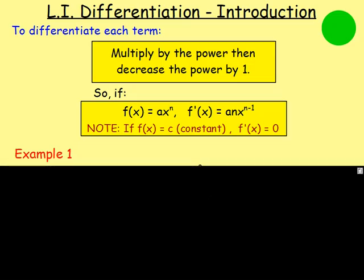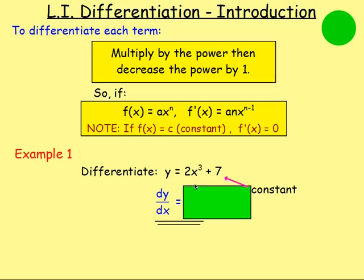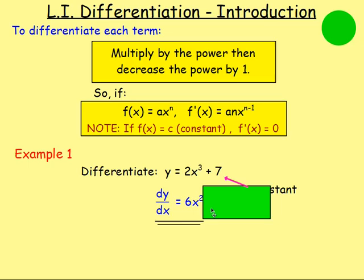Example 1: Differentiate y = 2x³ + 7. We're differentiating y, and on the other side we have x, so we write dy/dx equals. Multiply by the power: 3 times 2 gives you 6, and we take 1 off the power, so x³ becomes x². The 7 is a constant, so if you differentiate a constant you just get 0 — so that disappears. Your answer is dy/dx = 6x².